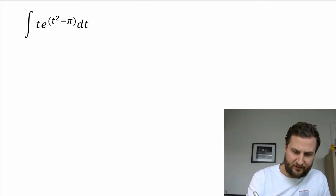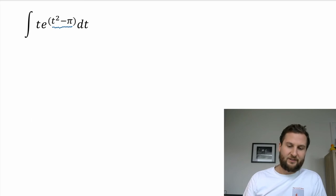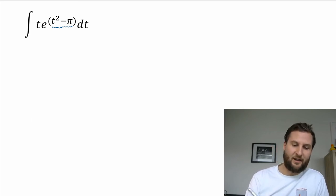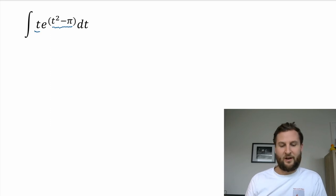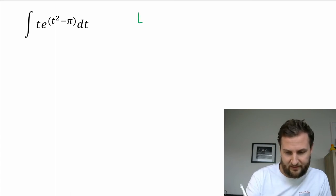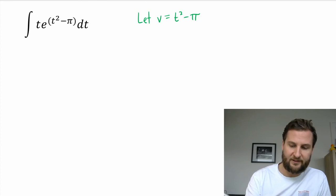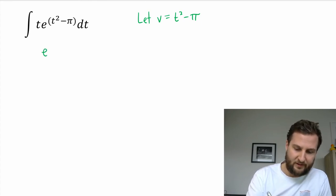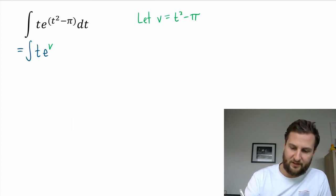For my third example, I have an interesting one. What is going on in this exponent? I have a quadratic equation up here, so e raised to the t² minus π, and then I have a t out front as well. When I see something like this, my initial thought is let's just swap out this exponent with a new variable. Let v equal t² minus π, and then I will have e raised to the v.